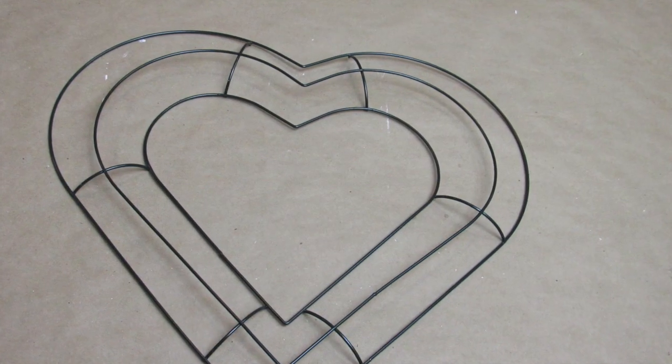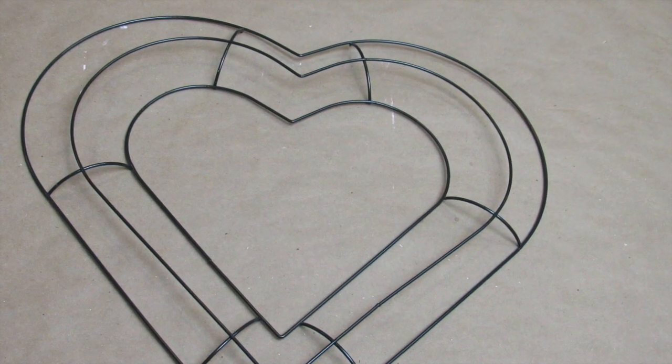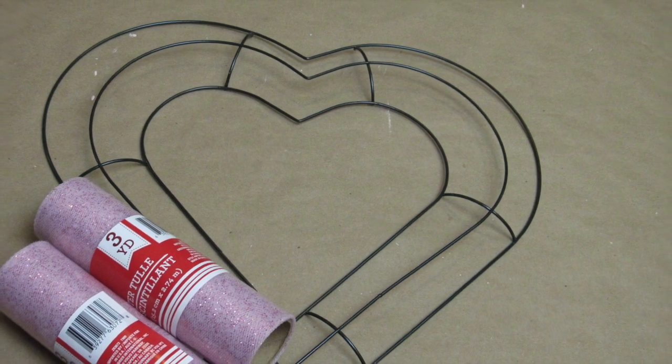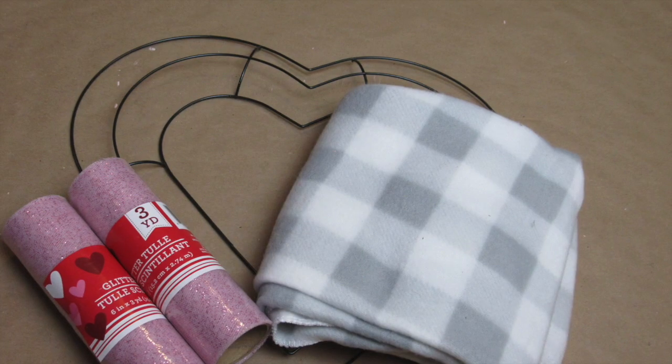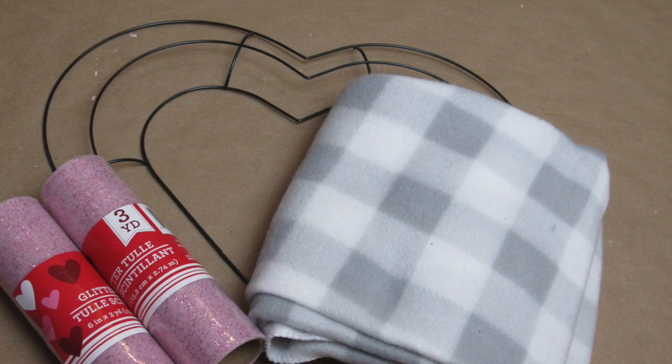For the second project, we will be making a rag wreath. For this wreath you will need the heart wire wreath form from Dollar Tree, two rolls of the glitter pink tulle found in the seasonal section.